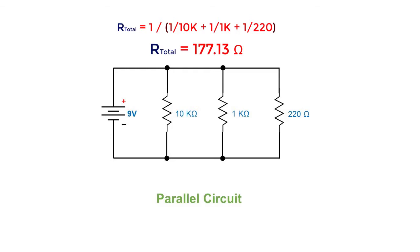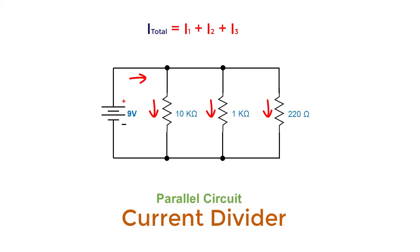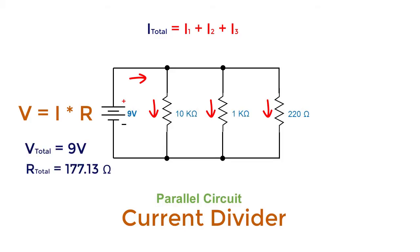Finally, the third principle is that the total current is equal to the sum of the individual branch currents, which means that in a parallel circuit connection, the current is being subdivided instead of voltage — that's why it is commonly referred to as a current divider circuit. If we want to know the actual current of the entire circuit, we use V is equal to IR. Since we already know the total voltage and the total resistance, the total current I is equal to 9 volts divided by 177.13 ohms, which equals 50.81 milliampere.